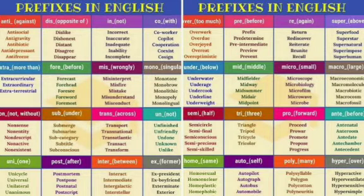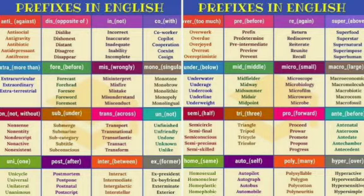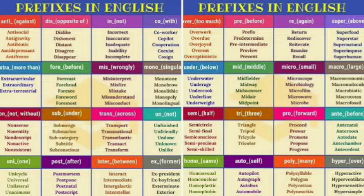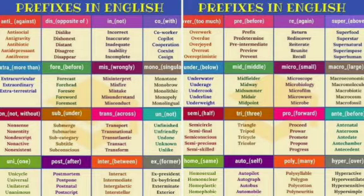Likewise, 'depend' — we fix '-ent' at the end of the word, and that is called a suffix. The adjective formed will be 'dependent'.